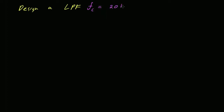What if we come along and say: design a low-pass filter with a cutoff frequency of 20 kilohertz? Twenty kilohertz is useful because it's the limit of human hearing—audio signals typically extend up to 20 kHz. I need values of R and C that will give me a low-pass filter with the desired cutoff frequency. We know omega cutoff equals 1 over RC.